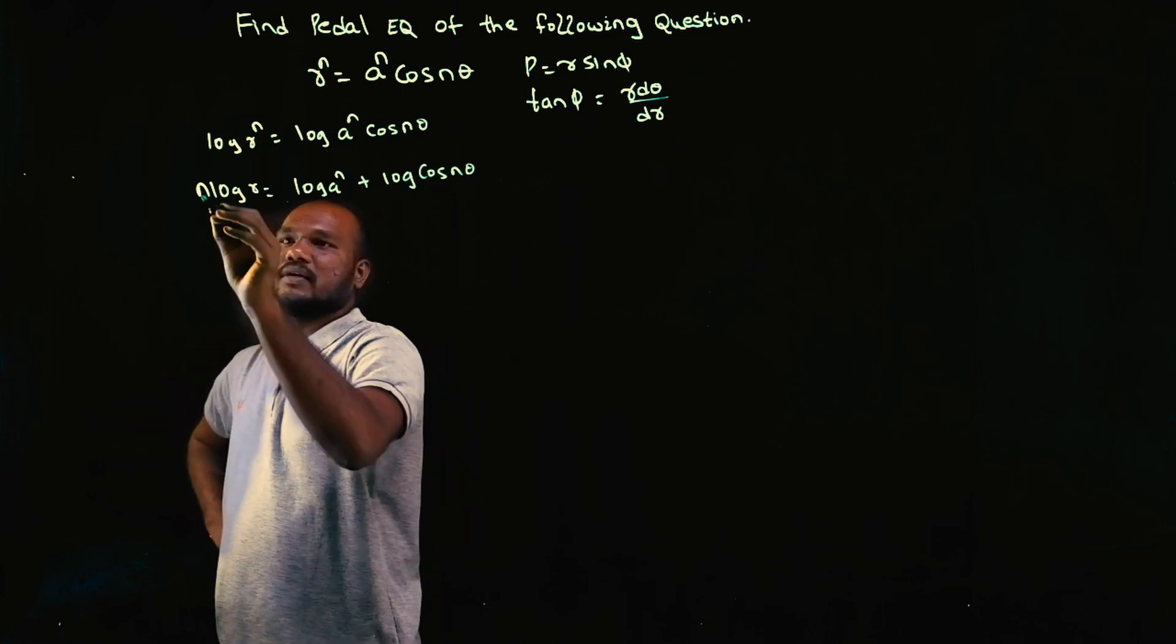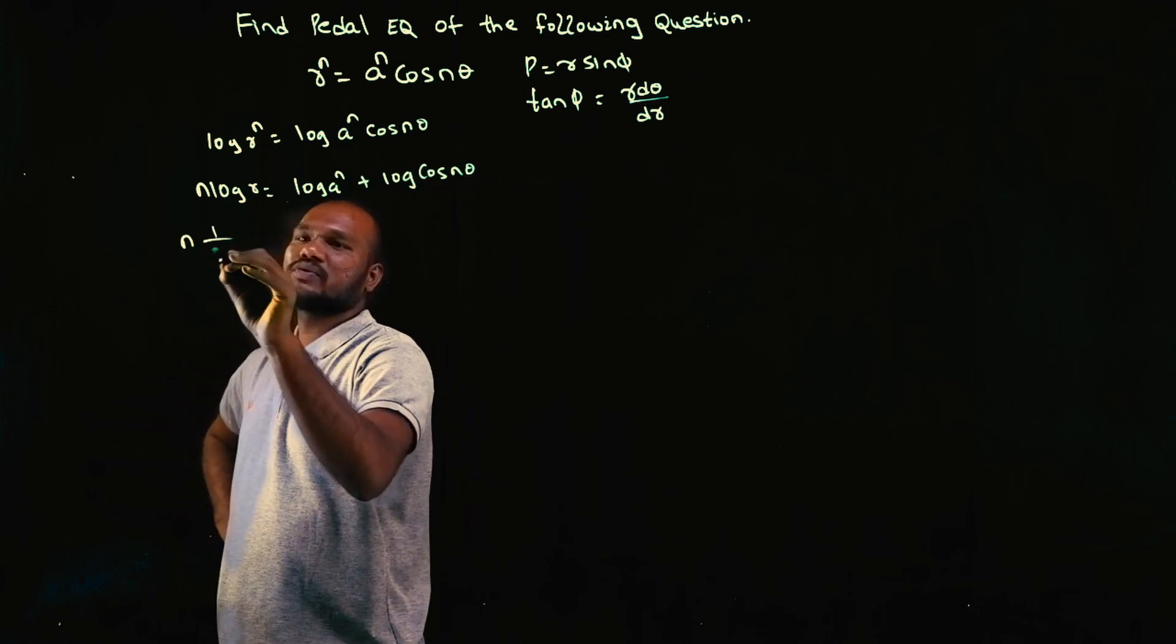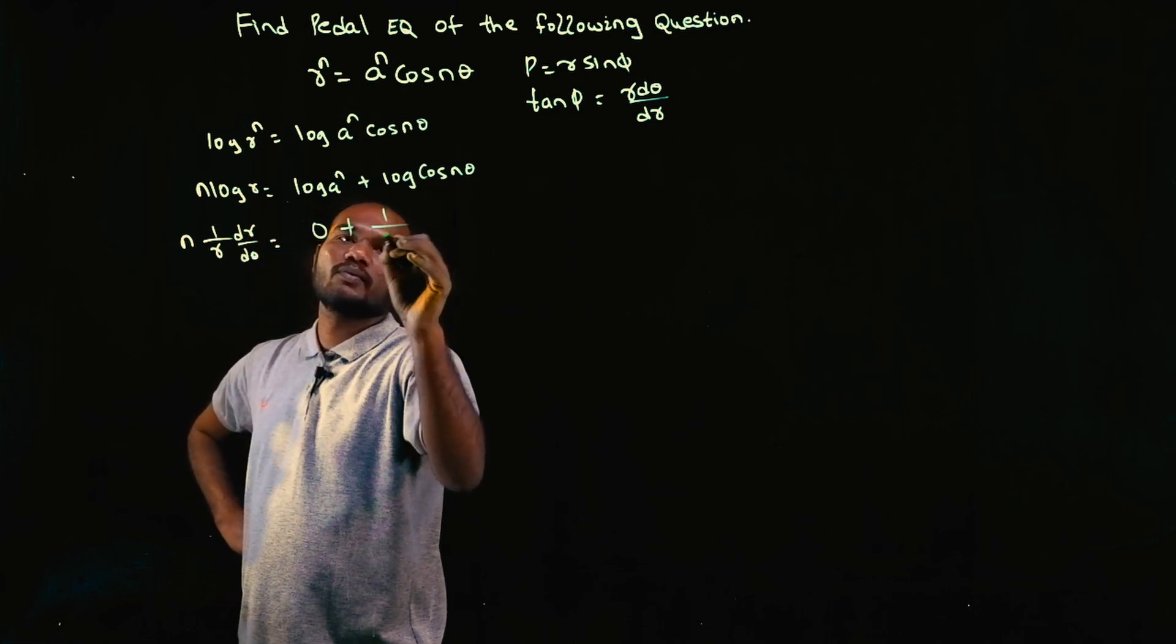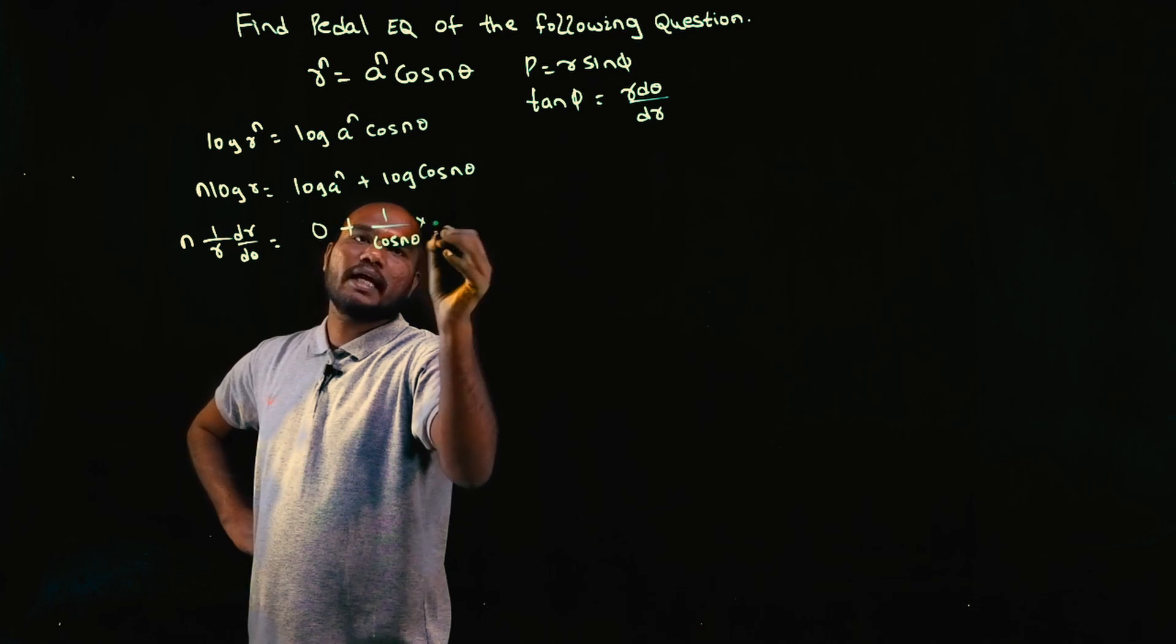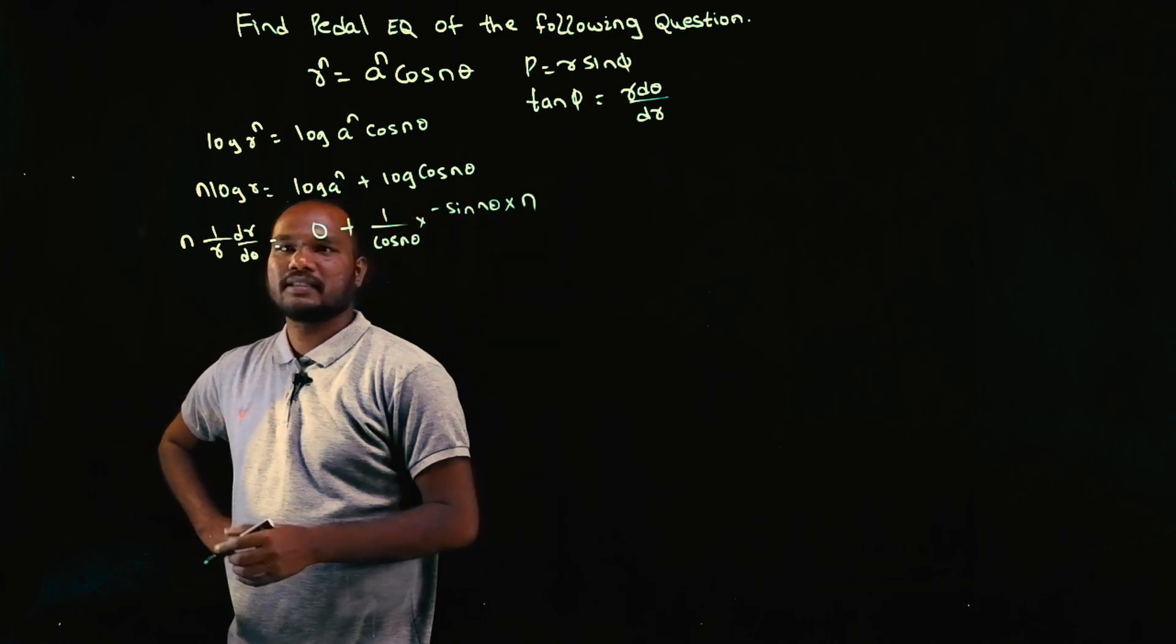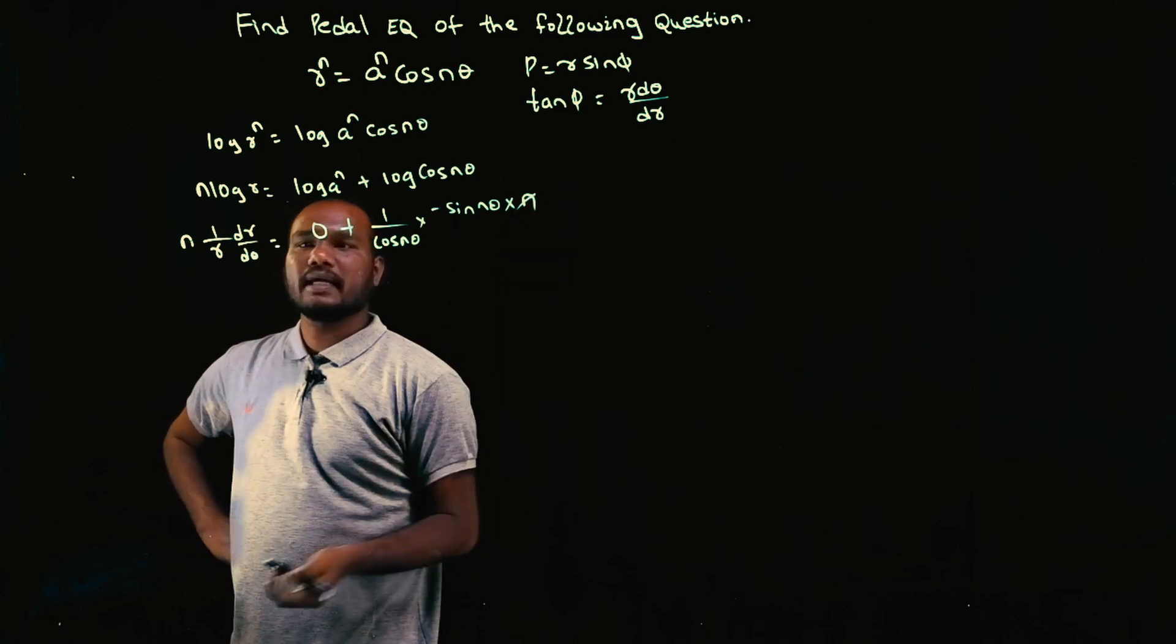Now let's differentiate. N will be like that: log R differentiation is 1 by R dr by d theta. This will become 0. Then we have 1 by cos n theta times minus sin n theta times n theta differentiation is n.